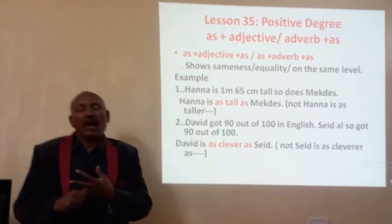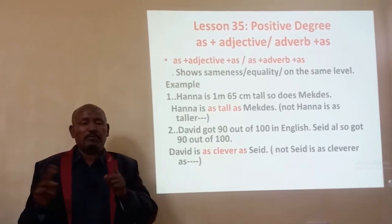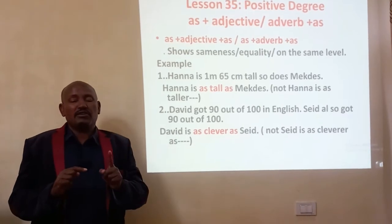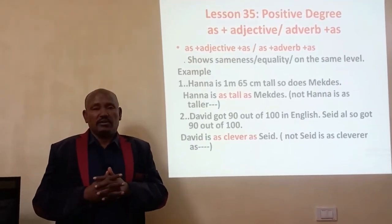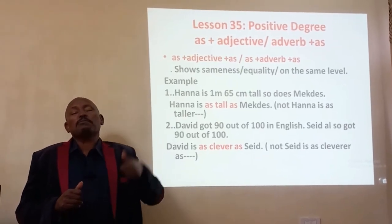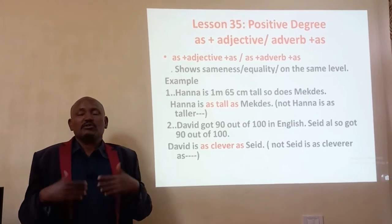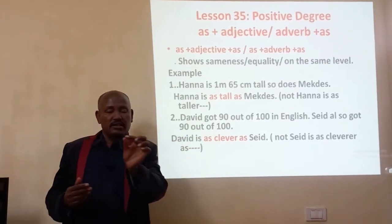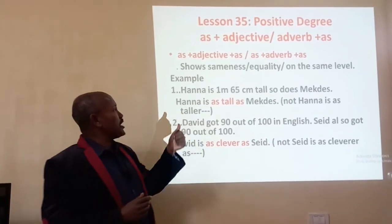Another third example: I know many people, and my friend also knows many people. Both my friend and I know many people. I can express this using positive degree: my friend knows as many people as I know, or I know as many people as my friend. Both these statuses are the same. This is the third example of as plus an adjective plus as — in this case, as plus the adjective 'many' plus as.